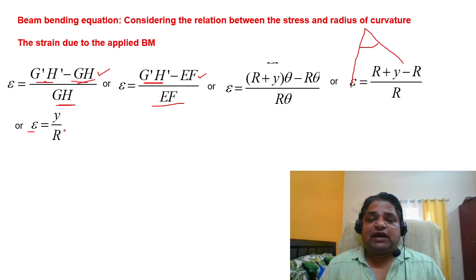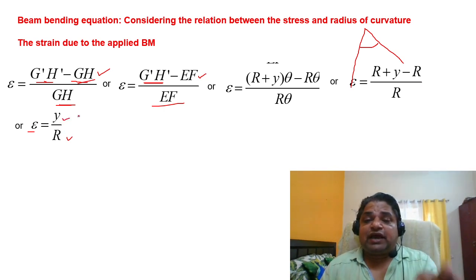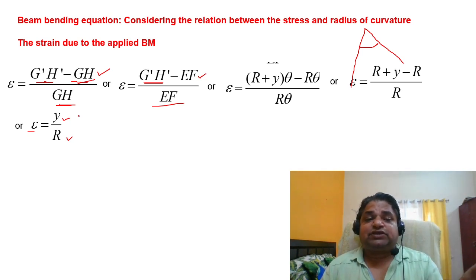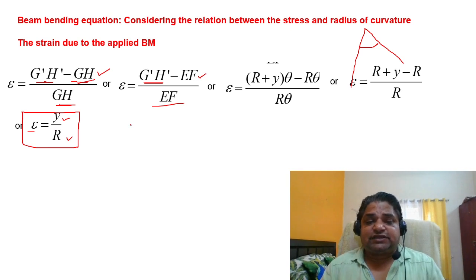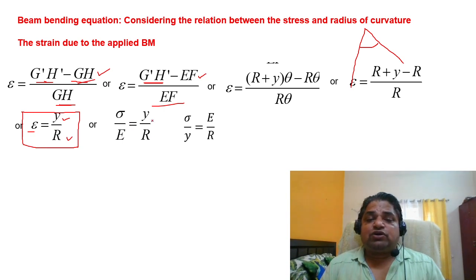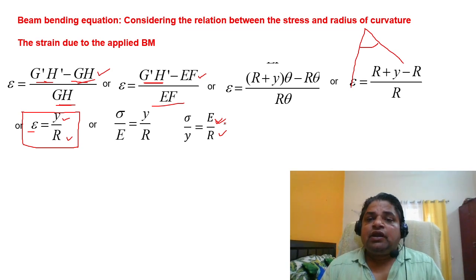We derived ε = y/R. Since stress σ = Eε, we can write σ/E = y/R, or σ/y = E/R. For a given load on a given beam, E/R is constant — E is constant for a given material and R is constant for a given beam shape. Therefore σ is directly proportional to y: the stress in any fiber is proportional to its distance from the neutral axis.